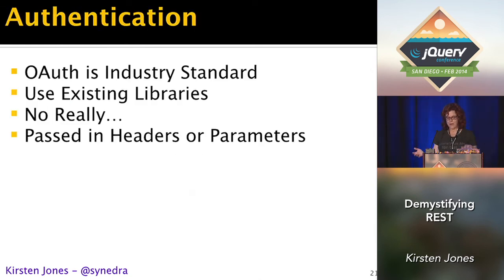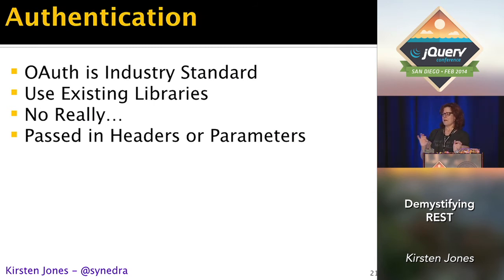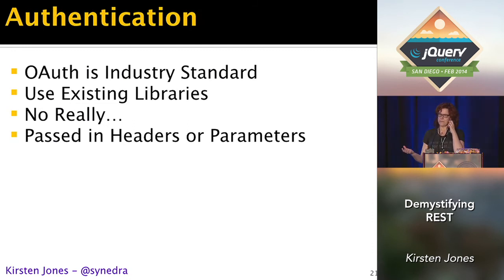For authentication, OAuth is the industry standard. Here's something I'm going to repeat a few times: use existing libraries for authentication, or for anything else that you can. You may think, I see the OAuth spec, I can write my own library. It probably won't work well, and you probably have better things to do with your time. There are a lot of very fussy pieces — for example, if the same parameter shows up more than once, they have to be alphabetized by value. This is not a great place to reinvent the wheel. Authentication information is either passed in the headers, which is easier in the long run, or as parameters, which is easier for prototyping.